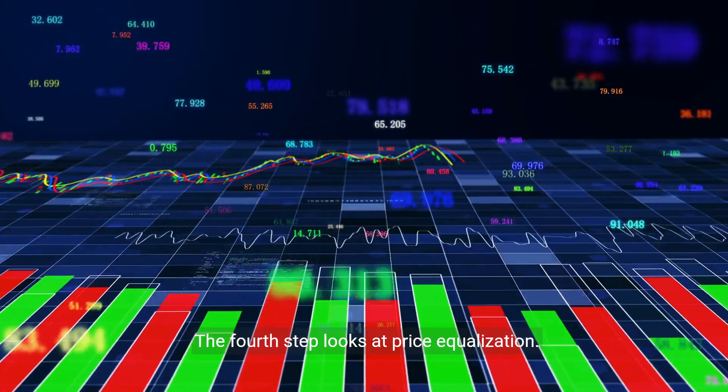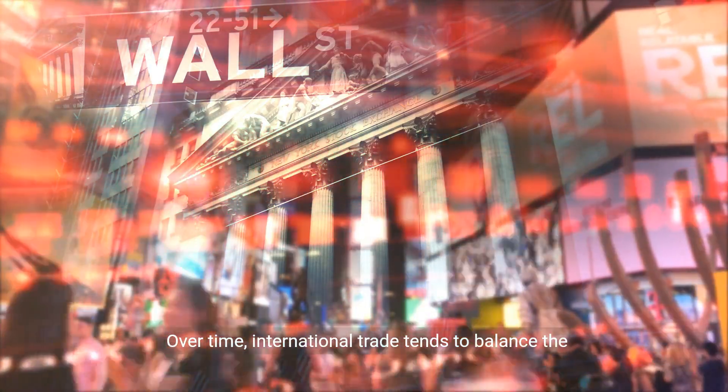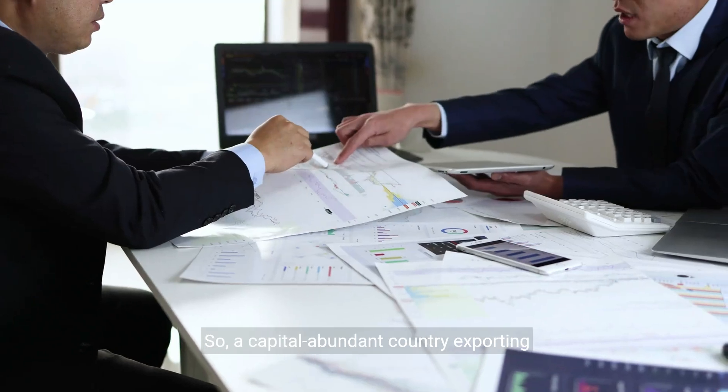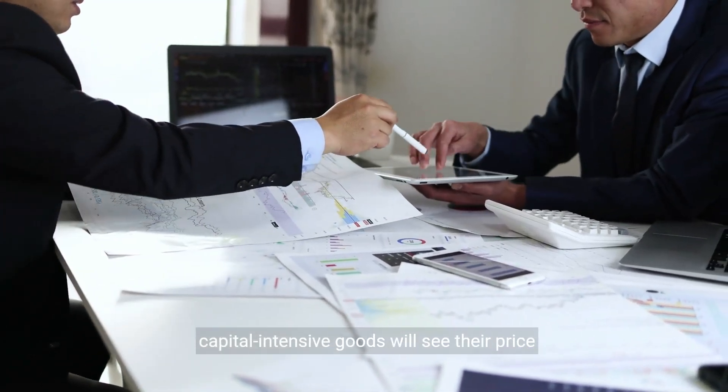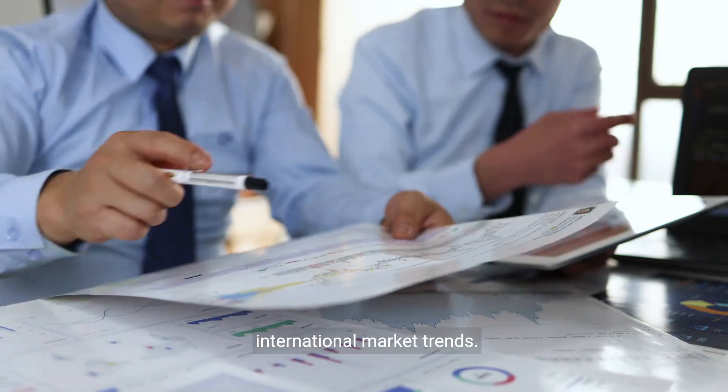The fourth step looks at price equalization. Over time, international trade tends to balance the prices of goods and factors. So a capital-abundant country exporting capital-intensive goods will see their price relative to labor-intensive goods adjust to reflect international market trends.